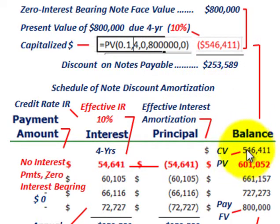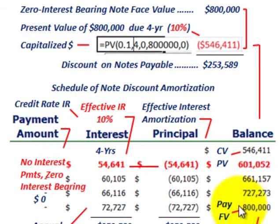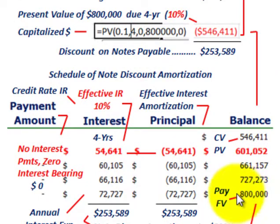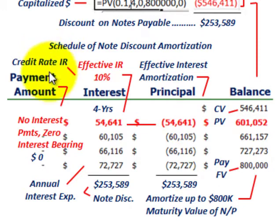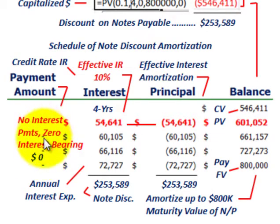We start the amortization schedule with the present value of the discounted note at $546,411 and must amortize it up to $800,000 — what they'll have to pay at the end of the fourth year in 20X5. With this zero interest bearing note, there is no annual payment and there are zero interest payments, since it's a zero interest bearing note. There are no cash interest payments.